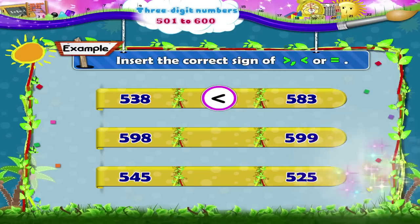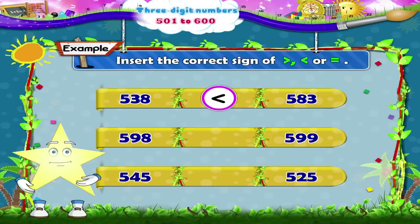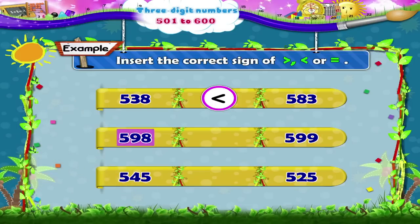In the next example, the numbers are 598 and 599. Can you answer this one? On comparing the digits in the units place, we find that 598 is less than 599.